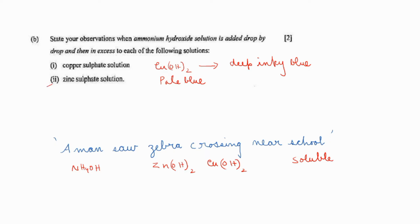Next one: zinc sulfate solution. Initially, if you are adding ammonium hydroxide drop by drop, you will be getting a gelatinous white precipitate of zinc hydroxide. If you are adding excess of ammonium hydroxide, this precipitate will be soluble in excess and you will be getting a clear solution. This will be the observation of the reaction.